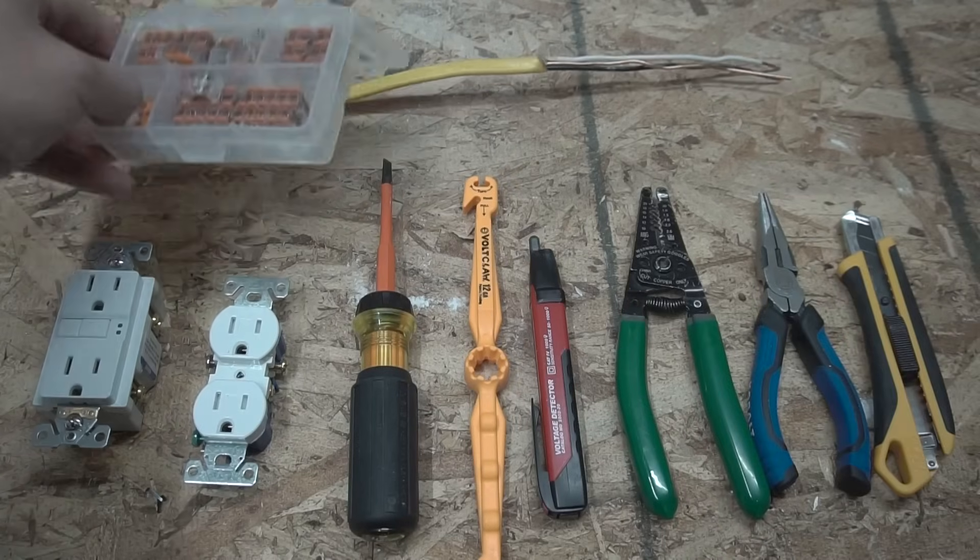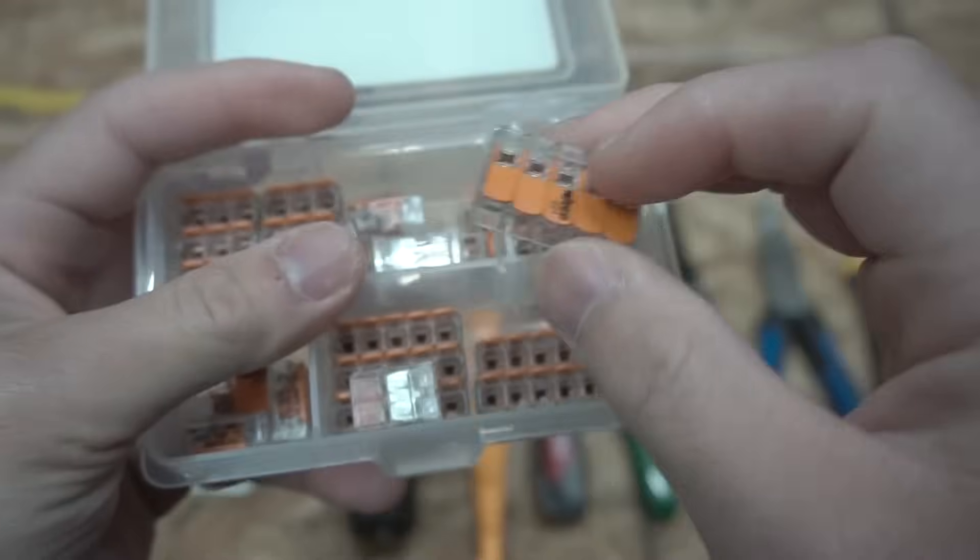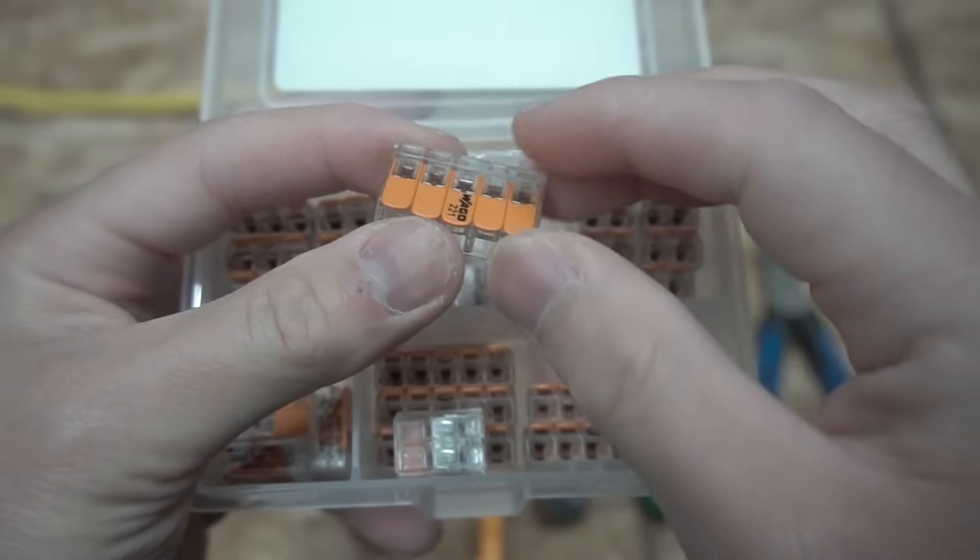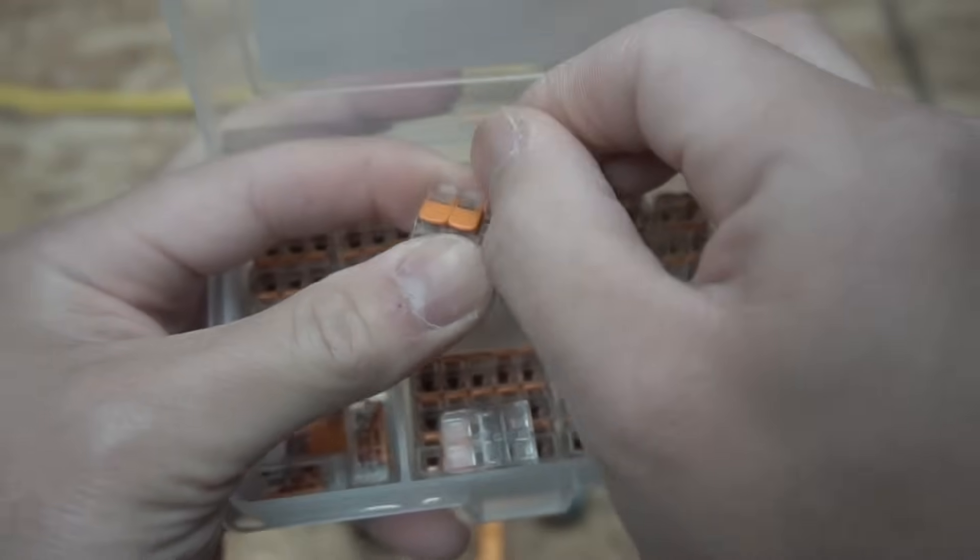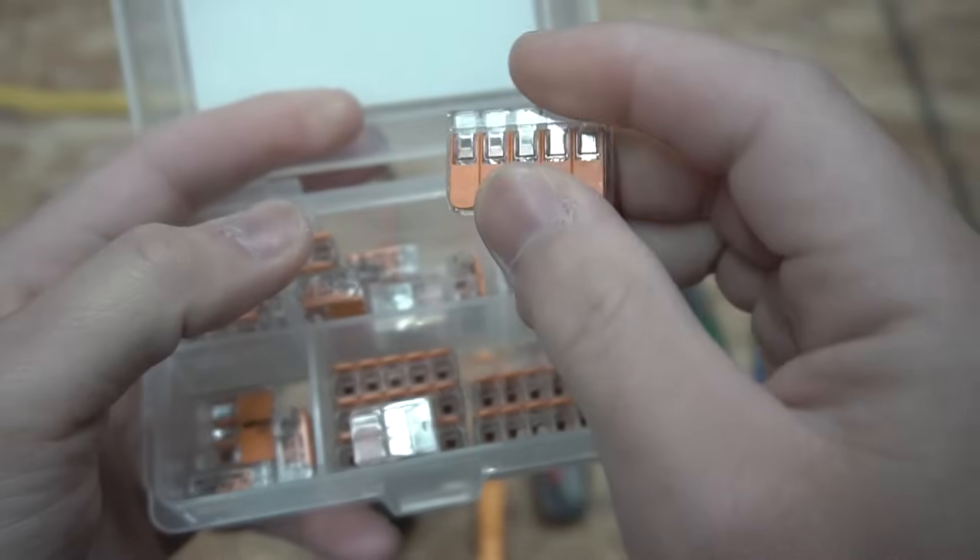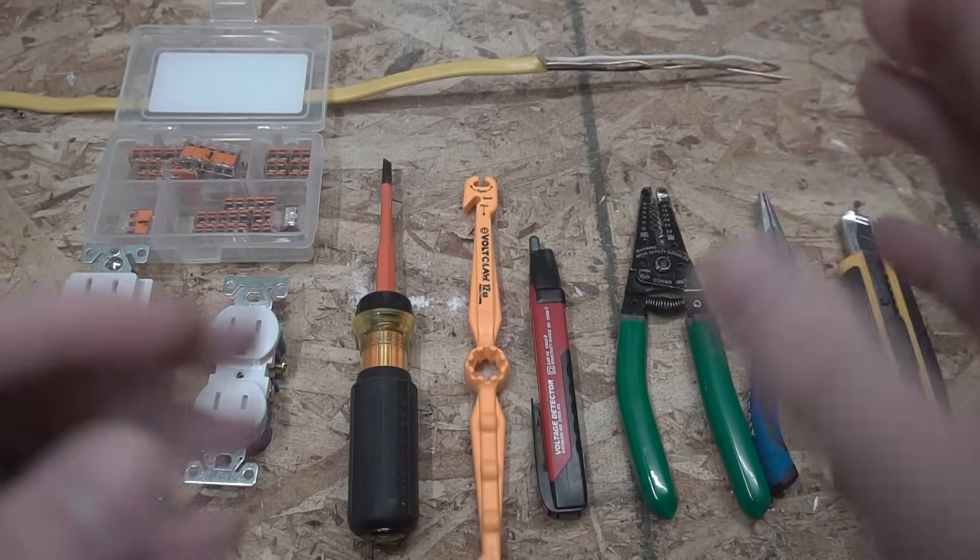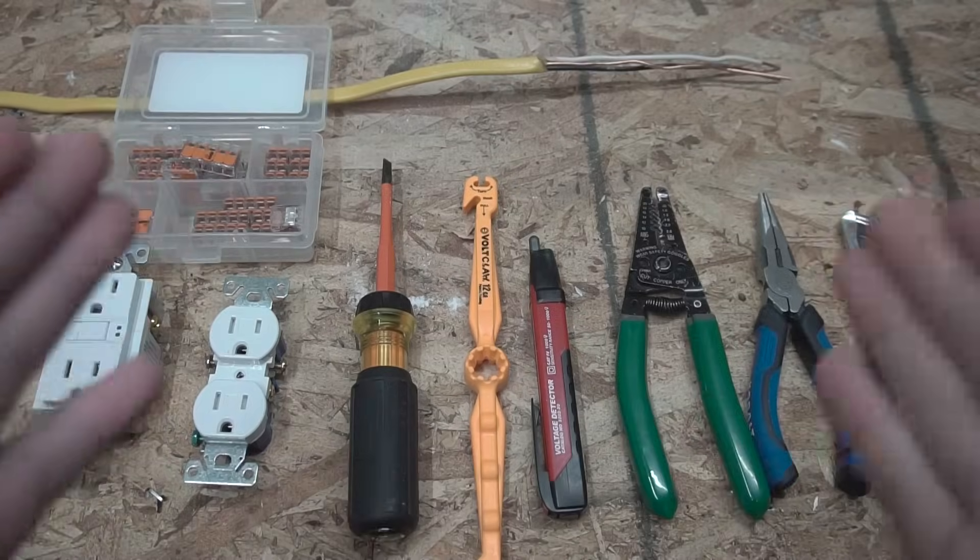But most importantly, the wire connectors that I'll be using today is the 221 Wagos. So, I love using this instead of the wire nuts because all you have to do is open up the lever, put in your wire, close it, and you're good to go and it's reusable. So, all these tools, including the Wagos, I'll leave it on the description down below. Check out those links if you're interested in getting these products.